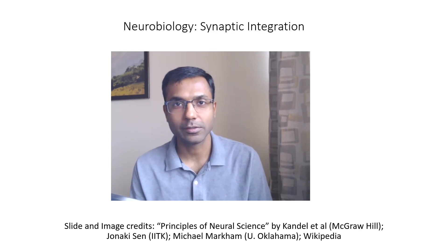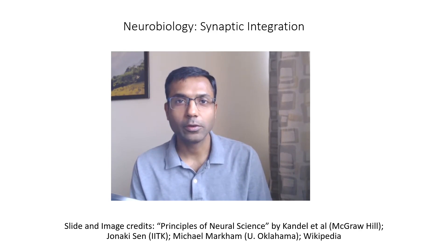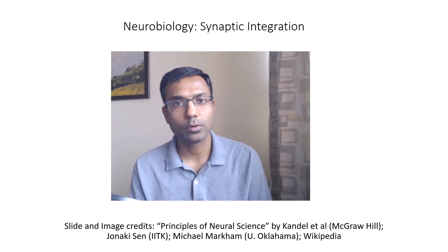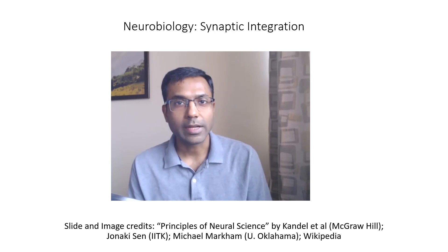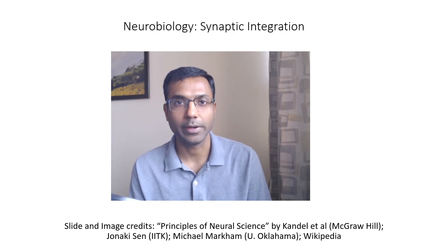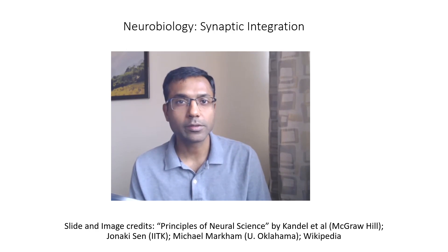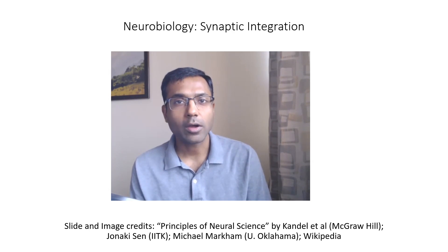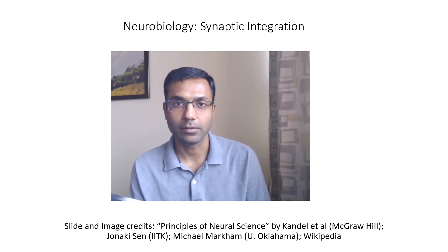Hi everyone, welcome back to neurobiology. In this series of videos we have been looking at synapses, the contacts between neurons. We have seen both electrical synapses and chemical synapses in the last few videos. Synapses tell us how one neuron affects another at a particular point. But if you consider a large neuron that has multiple dendrites, it would be receiving inputs from many other neurons at various contact points. So how are all these inputs combined together to determine the final activity of the neuron? That is what we will try to understand in this video.